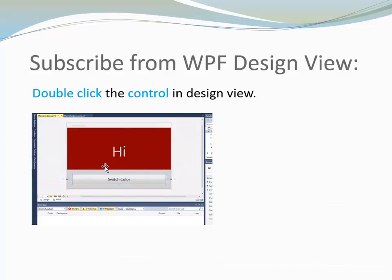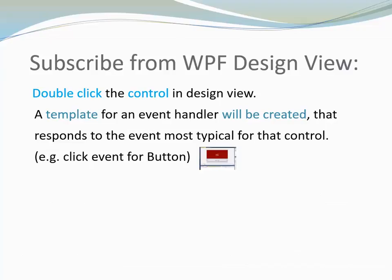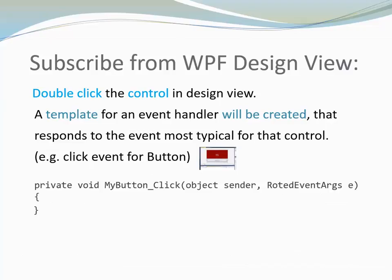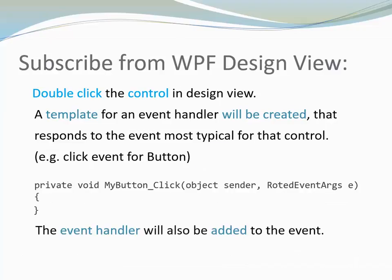MyGo is very simple — it has a label that says Hi, and it has a button. So if I want to be able to click this button in order to change the color of my label, I could just go right here in the Design View and double-click on my button. It will create for me a template for an EventHandler that responds to the event most typical for that control. Each control has multiple events — the button could respond to a click, a mouse rolling over, or being brought into focus. But the most typical event is the clicking of the button. So when I double-click in the Design View, it creates the MyButtonClick EventHandler, which will be called every time the button is clicked. All you need to do is plug in the code — you don't even have to call the plus-equal compound operator, because the EventHandler will automatically be assigned to the event.